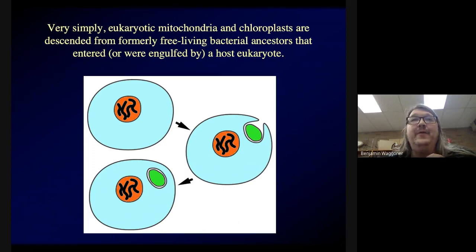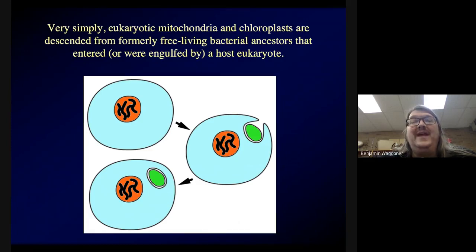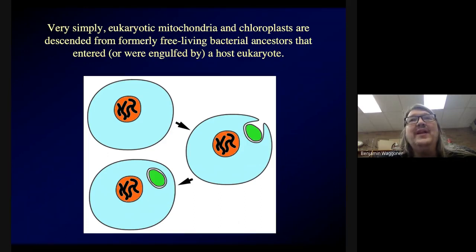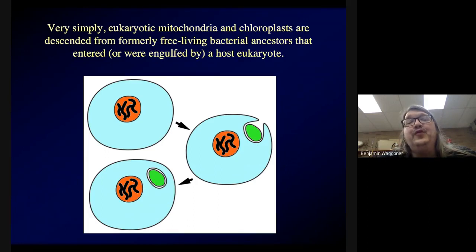She came up with the idea that's now very well known and that virtually everyone agrees she got right: that eukaryotic mitochondria and eukaryotic chloroplasts are descended from ancestors that were free-living bacteria — ancestors that either penetrated or got engulfed by a host eukaryote. However it happened, these bacteria entered a very early eukaryotic cell, took up residence inside, weren't digested, and the two ended up becoming mutually dependent on each other.